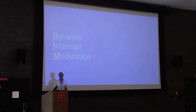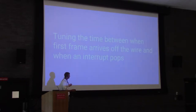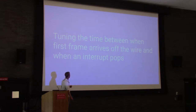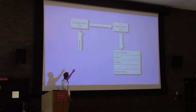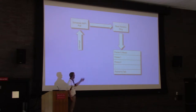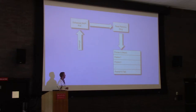So what is dynamic interrupt moderation? For those who need a bit of review: people probably aren't familiar with how packets in the Linux kernel actually make their way from physical hardware into the kernel stack itself. The main idea is that we tune the time between when the first frame arrives on the wire and when an interrupt pops. We have an interrupt that pops, we schedule a polling event, and that polling event then reads the receive ring of the NIC. In this picture, we have frame zero to frame N with a head and a tail — frames that have not been read and pulled out of hardware yet and marked as complete.